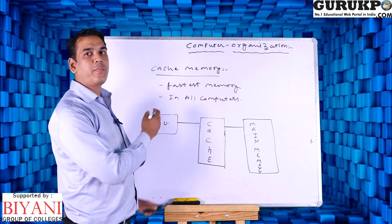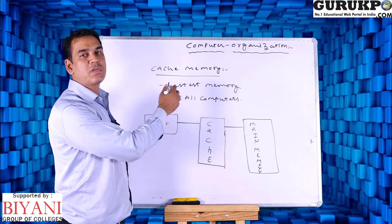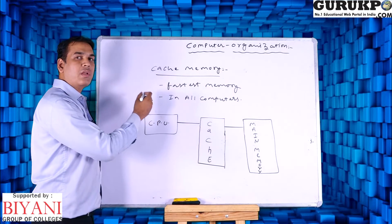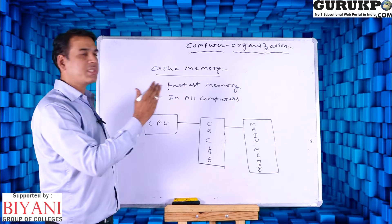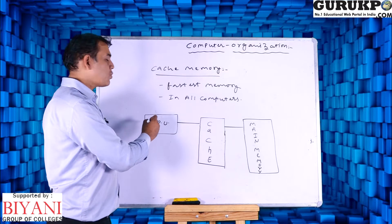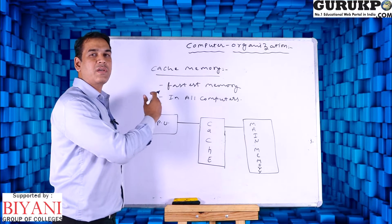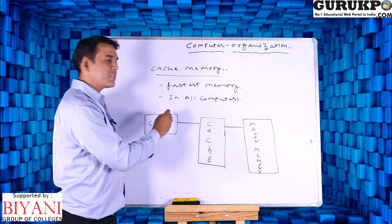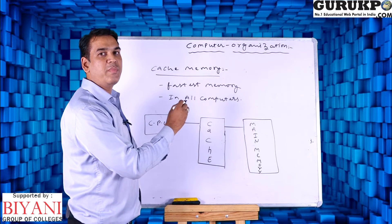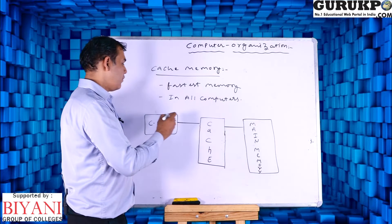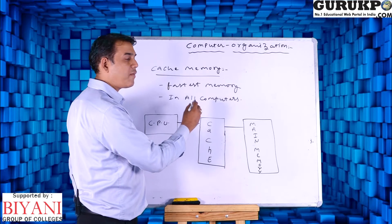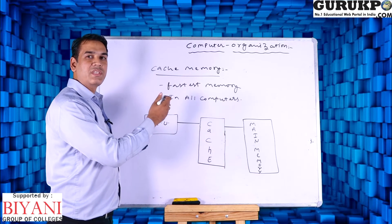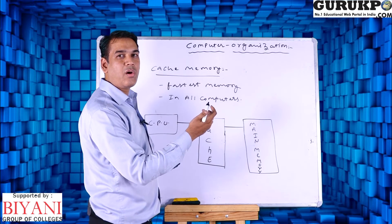Let us discuss cache memory. Cache memory is the fastest memory in the computer. With the use of cache memory we can process data very quickly. All computers have cache memory. The need for cache memory arises because CPU — the central processing unit, which contains the ALU and control unit — sometimes transfers data to main memory faster than main memory can receive it. So we first store some data in cache memory, and then cache memory transfers it to main memory when main memory is ready.